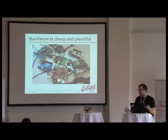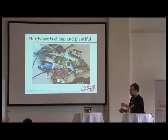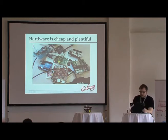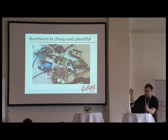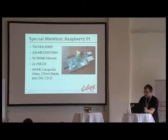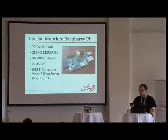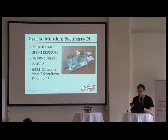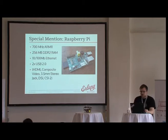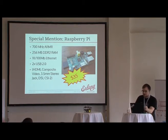Embedded hardware today is cheap and plentiful. For a very small amount of money you can get a very powerful processing board. In this picture we have gumsticks, BeagleBones, Raspberry Pi, and some Arduinos thrown in for good measure. One of these gets a special mention: the Raspberry Pi. It's a platform that has taken the world by storm — essentially a credit card-sized computer with a 700 MHz processor and 256 MB of RAM. It gives you Ethernet, USB, HDMI, and all that for $35. The entry barrier to start playing with embedded stuff is pretty much shattered.